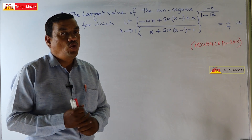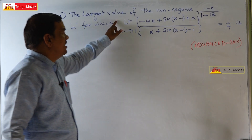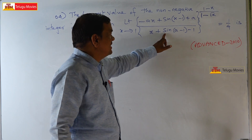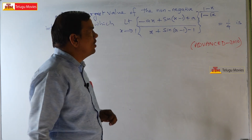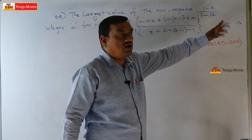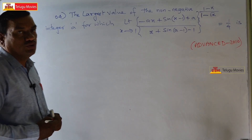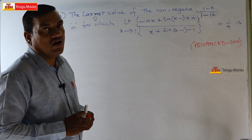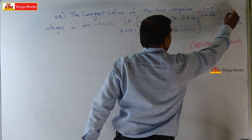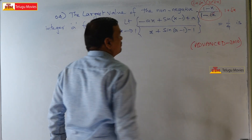Dear students, welcome to the fourth problem. Find the largest value of the non-negative integer a for which limit x→1 of [(−ax + sin(x−1) + a) / (x + sin(x−1) − 1)]^((1−x)/(1−√x)) = 1/4. This was asked in JEE Advanced 2010 as a single correct answer type. Note that 1−x = (1+√x)(1−√x), so (1−√x) cancels, leaving exponent (1+√x).